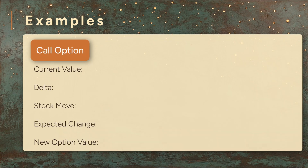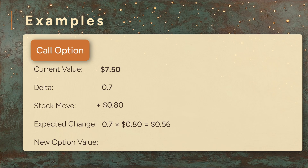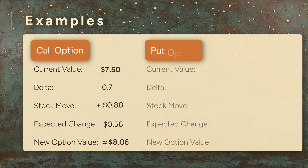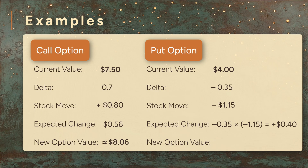Let's see how you might use delta in practice. You own a call option worth $7.50 with a delta of 0.7. The underlying stock rises by $0.80. We just multiply: your call option should increase by about $0.56, bringing its estimated value to roughly $8.06. Now you're holding a put option worth $4 with a delta of negative 0.35. The stock price drops by $1.15 — a negative move. Multiply: the two negatives make a positive. Your put should rise by about $0.40, for an estimated new value of around $4.40.